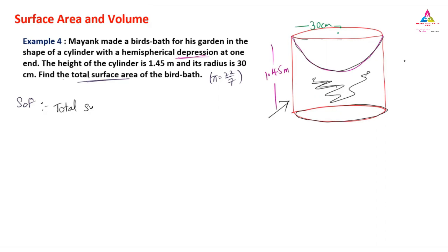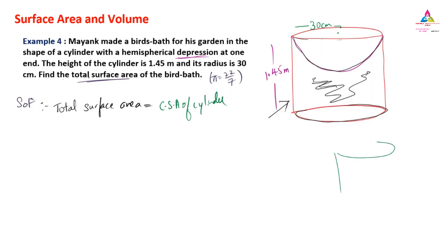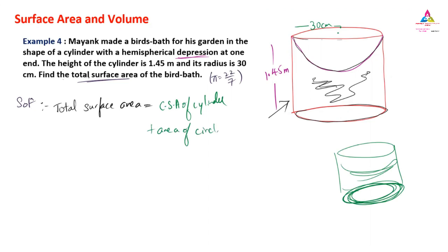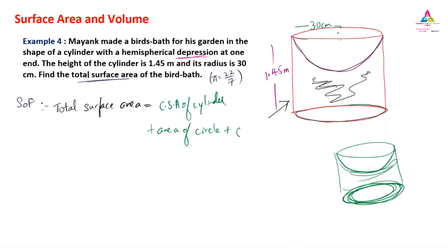So the total surface area formula will be: curved surface area of the hemisphere, plus the curved surface area of the cylinder — that rolled surface — plus the area of the bottom circle, plus the curved surface area of the hemisphere. So we write down the curved surface area of the hemisphere.